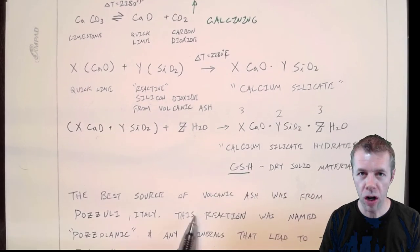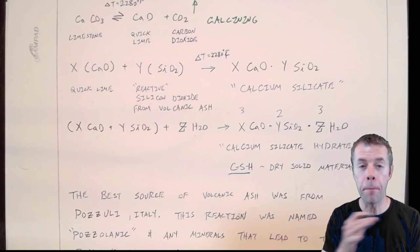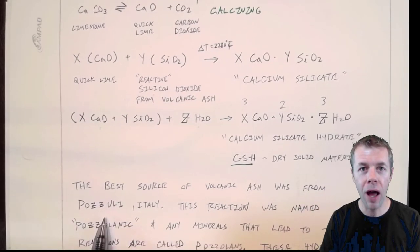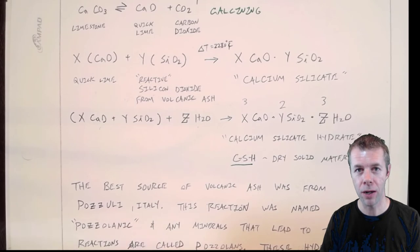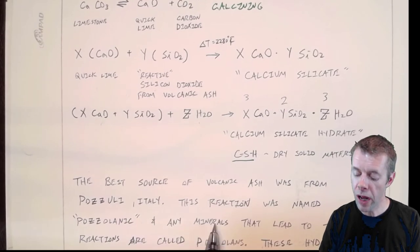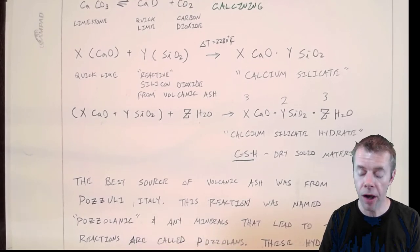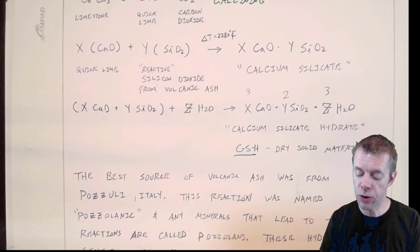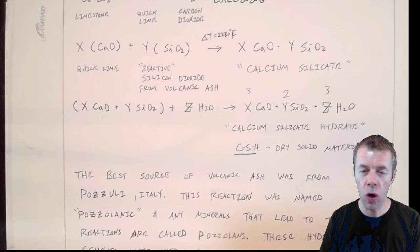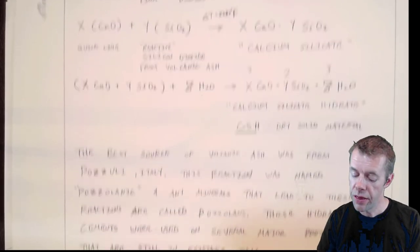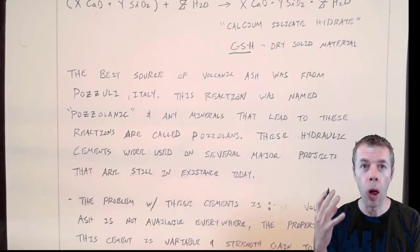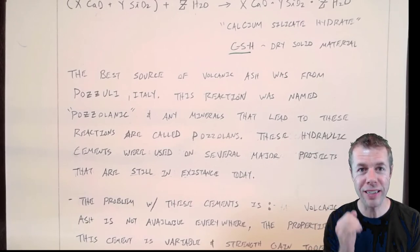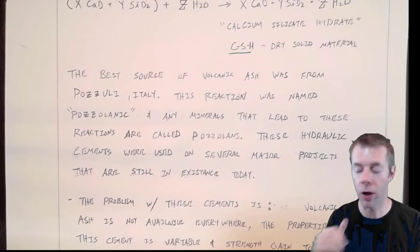And the best source of volcanic ash in the world, the best source that the Romans knew about was in Pozzolai, Italy. This reaction was therefore named Pozzolonic. And any minerals that led to these reactions are called Pozzolans. These hydraulic cements were used on several major projects that are still in existence today. Let's take a look.